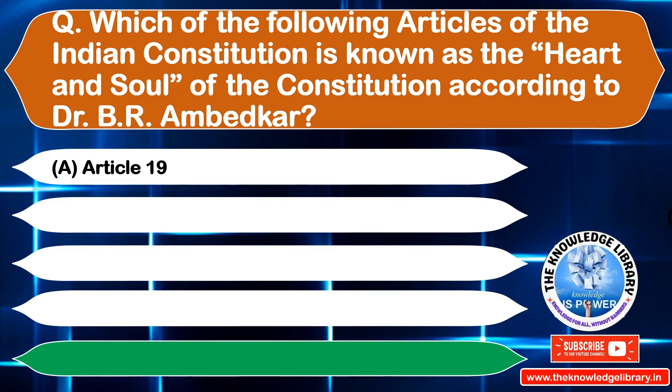The next question is: right to freedom of religion is under which articles? Option A: Articles 19 to 22, Option B: Articles 23 to 24, Option C: Articles 25 to 28, Option D: Articles 29 to 30. The correct answer is Option C: Articles 25 to 28.